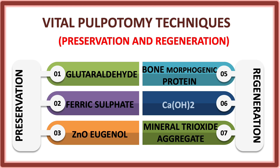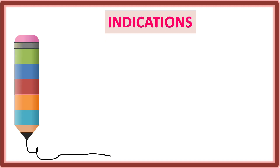The next vital pulpotomy technique is preservation and regeneration. Under preservation, we have glutaraldehyde, ferric sulfate, and zinc oxide eugenol. Under regeneration, we have bone morphogenic protein (BMP), calcium hydroxide, and MTA — mineral trioxide aggregate.